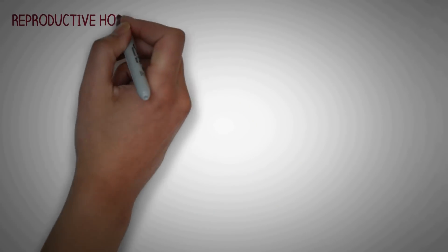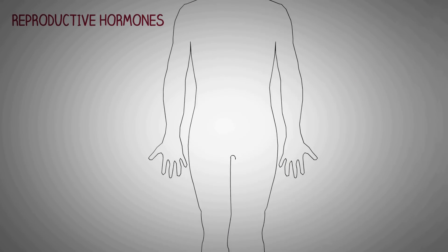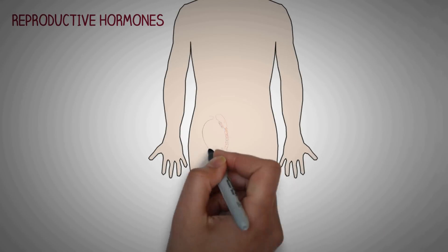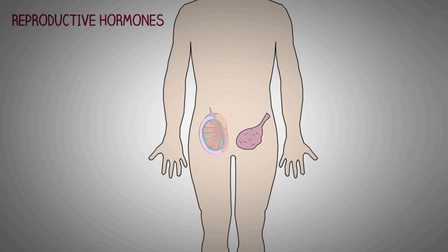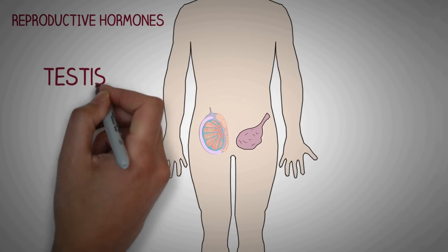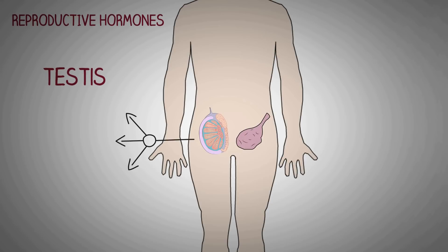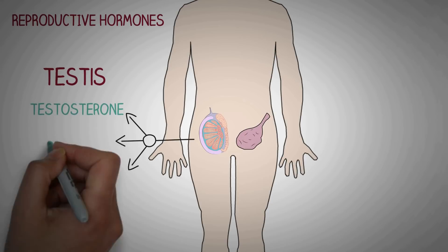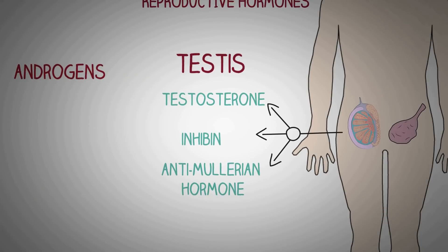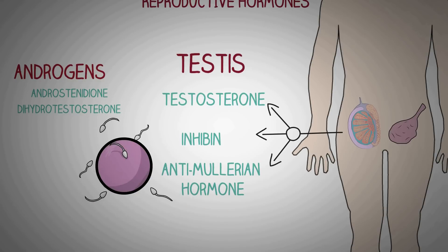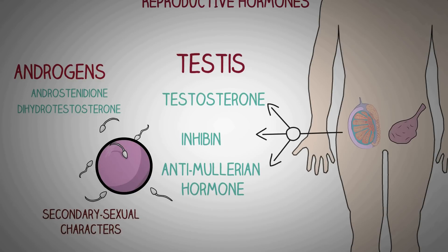Now we will take a brief look at the reproductive hormones. In males we have the testes and in females we have the ovaries. The male gonads, the testes, produce important hormones like testosterone, inhibin, anti-Müllerian hormone, and other androgens like androstenedione and dihydrotestosterone. These hormones are essential for sperm formation and the development of secondary sexual characters.